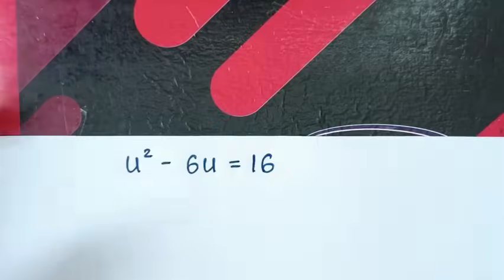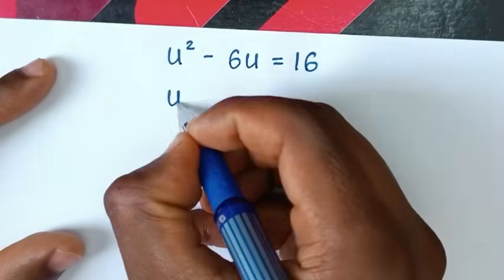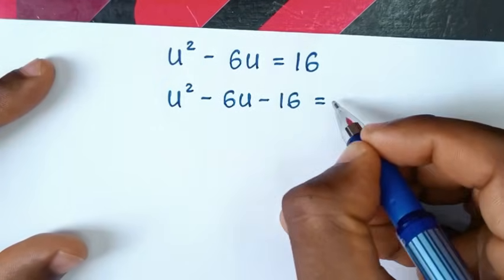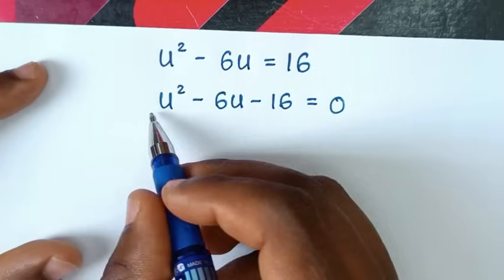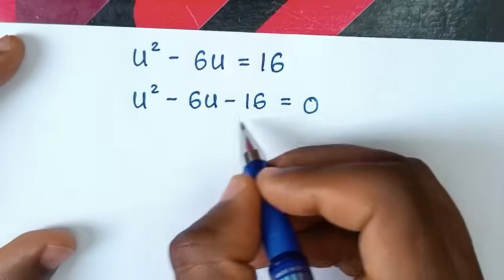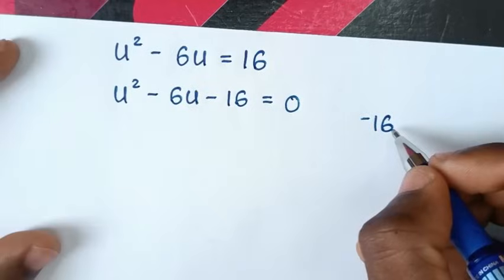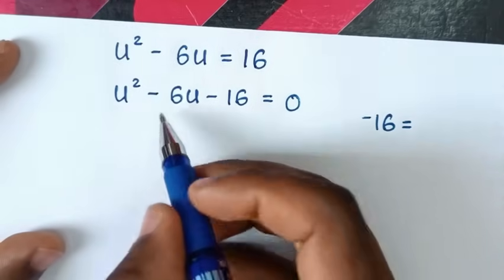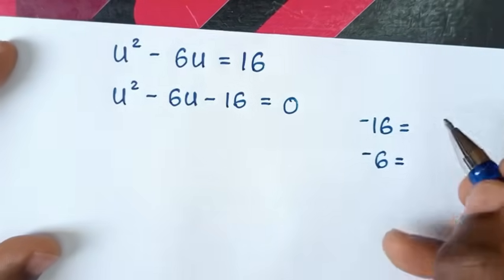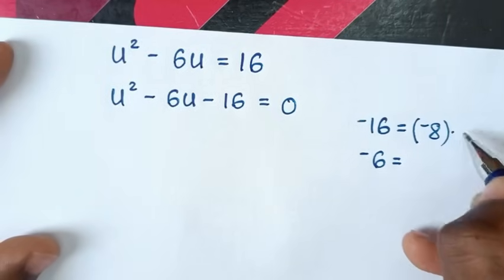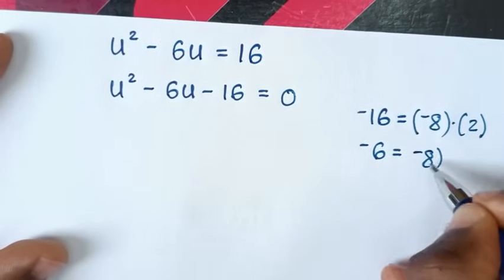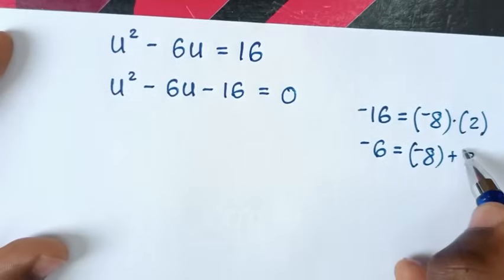In the next step, we take 16 to the left side, giving u square minus 6u minus 16 equals 0. This quadratic can be solved by grouping and factorization. The constant negative 16 is the product and the coefficient of u, negative 6, is the sum. Negative 16 is the product of negative 8 times 2, and negative 6 is the sum of negative 8 plus 2. So our factors are negative 8 and 2.